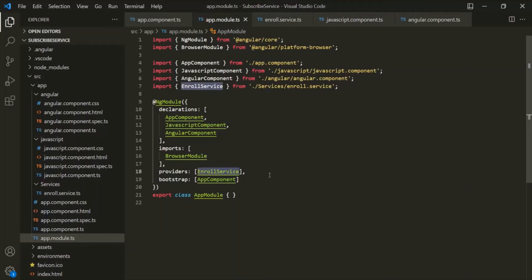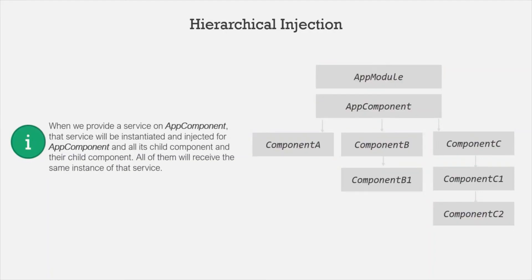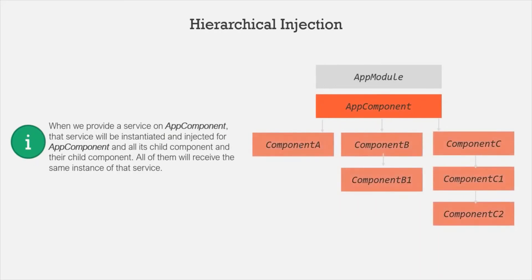The next level is the app component level with its child components. The app component and all its child components and their child components will have the same instance of the service if we provide the service at the app component level. This is true for any component. Now remember that instances don't propagate up — they only go down the tree of components. For example, if we provide a service on component C1, the instance will be injected for C1 and its child components.